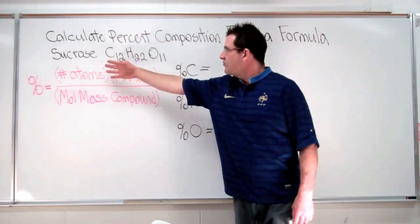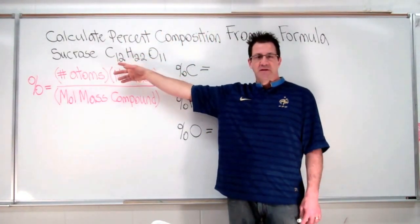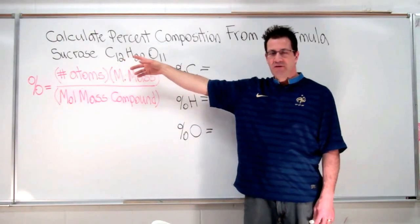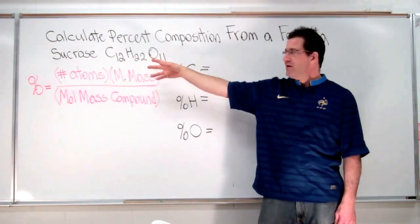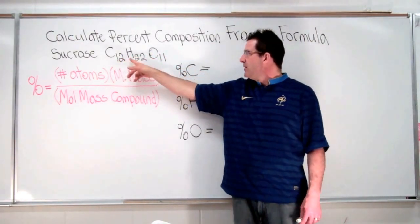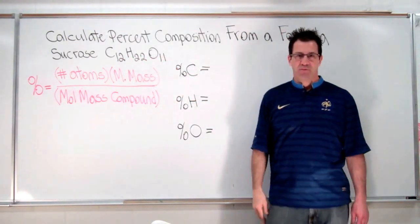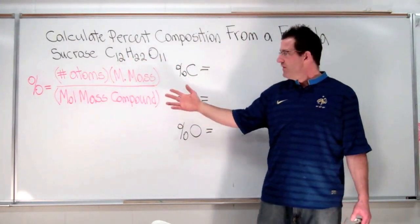So here we have sucrose and the chemical formula is C12H22O11, and we're going to be calculating the percent composition of carbon, hydrogen, and oxygen. And this is the general formula we're going to use to do that.